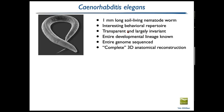Caenorhabditis elegans is a one-millimeter-long soil-living nematode worm. It has a range of interesting behaviors including various modes of locomotion, withdrawal responses, positive and negative taxis, feeding behavior, reproductive behavior, and is capable of associative learning. As a technical matter, it's transparent to visible light, which is an important experimental advantage, and it's largely invariant — its entire developmental lineage is known from the fertilized cell through all divisions to the adult animal.